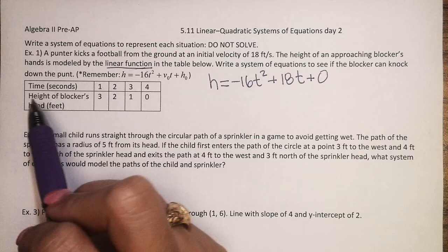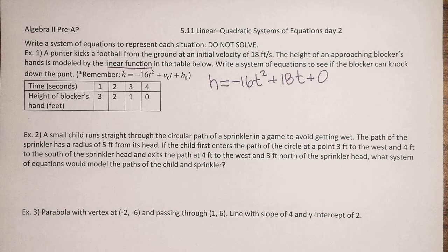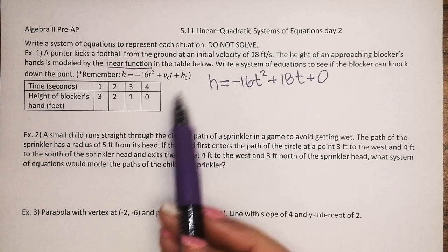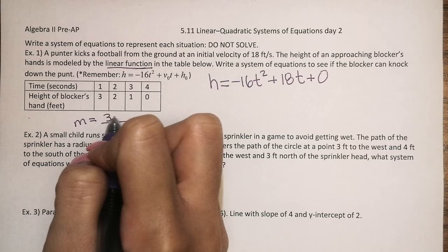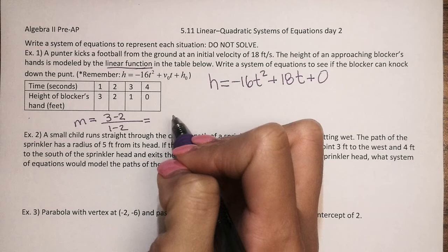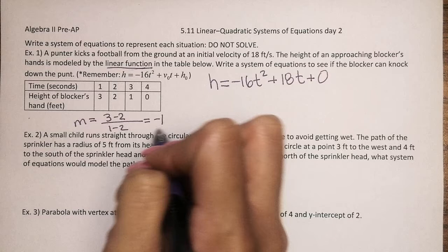And now we need to write the equation for the blocker's hand, which is in this linear function table here. So in order to find our equation for a table, we'll need our slope and our y-intercept. So one way to find our slope is just to take the y-value, so we can just do 3 minus 2. And then take the x-value, so 1 minus 2. And that gives you a negative 1. So that's going to be our slope, negative 1.